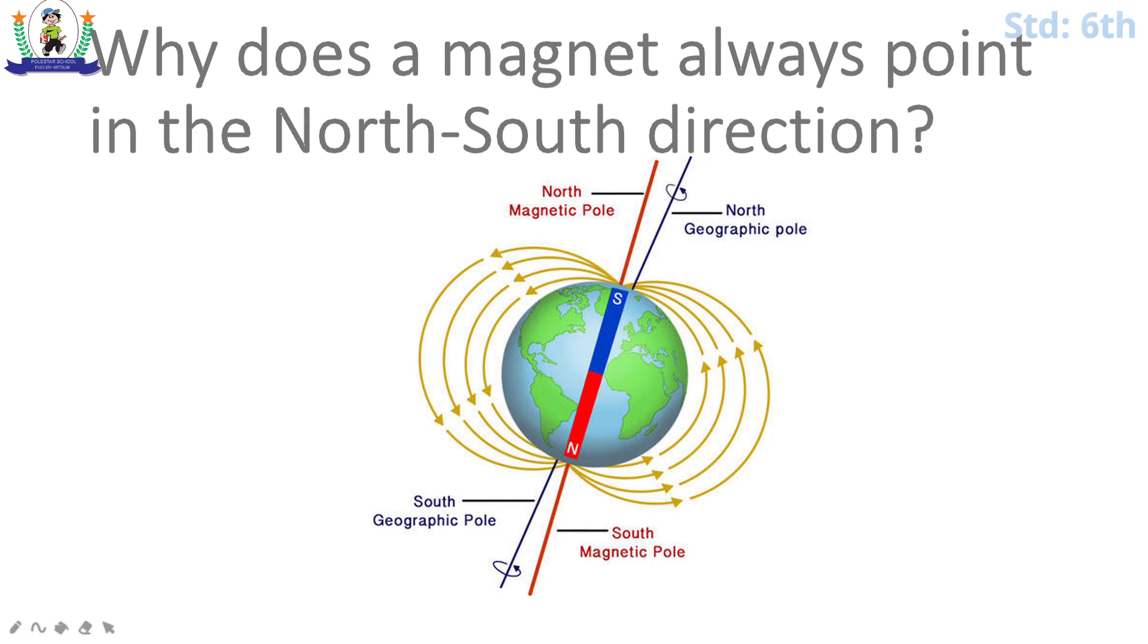So, the directive property of a magnet is used to make a compass. If we create a compass, we create one small needle. This is a magnet which points in the North direction. And magnets can attract one another.